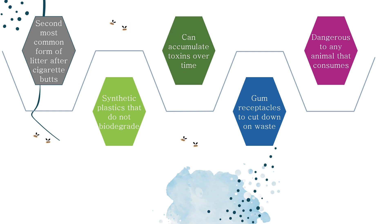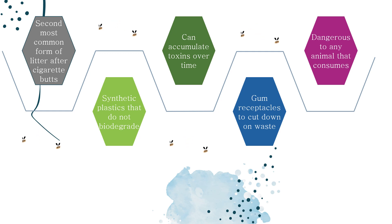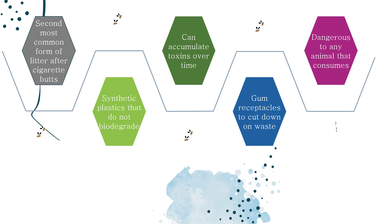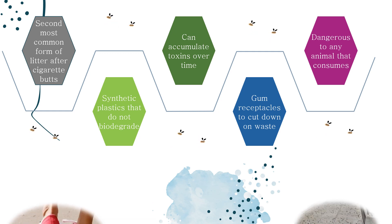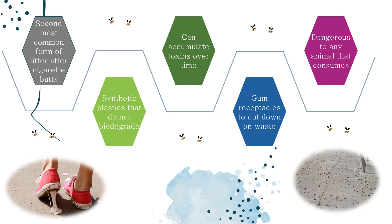Sustainable chewing gums have been produced, and cities are implementing gum receptacles to cut down on waste. In a six-month period, these trash cans cut down on littered gum by 72%. Chewing gum can be dangerous and toxic to any animal that consumes it — birds could mistake the gum for food and be killed when they choke on it or when it clogs their digestive system.